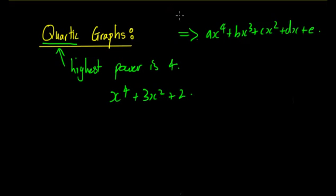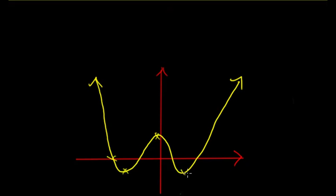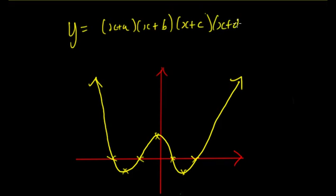When graphing these you need to understand the general shape of quartic graphs. They're quite similar to cubics. In general they have a shape like this. You can see the similarity to cubics however it does have three turning points and four intercepts. That's when you have the equation in the form y = (x+a)(x+b)(x+c)(x+d).